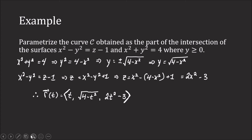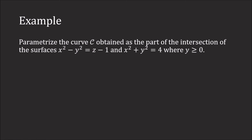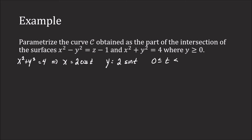For the second method, we know x² + y² = 4 represents a circle centered at the origin with radius 2. This has a parameterization x = 2cos(t), y = 2sin(t), where 0 ≤ t ≤ 2π. Since y ≥ 0, t will only go from 0 to π.